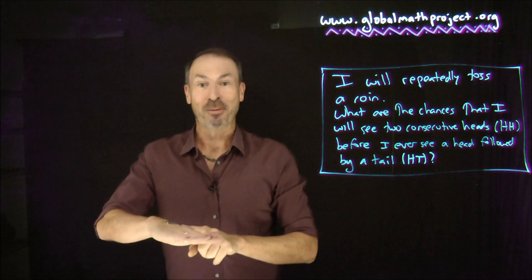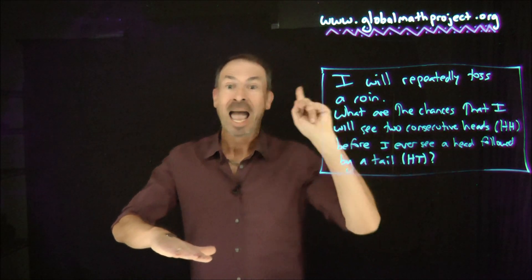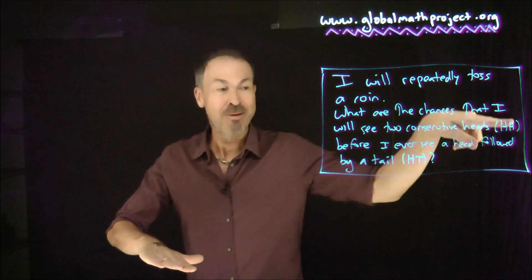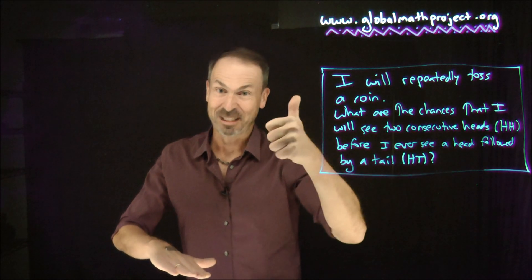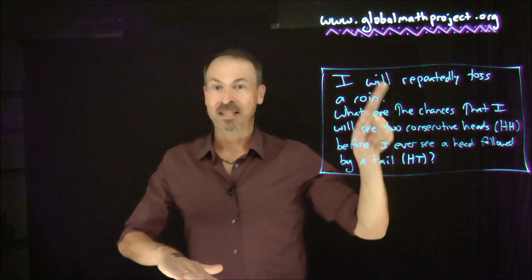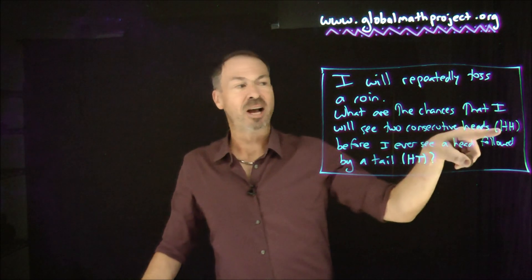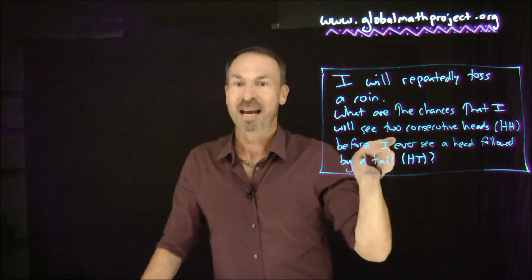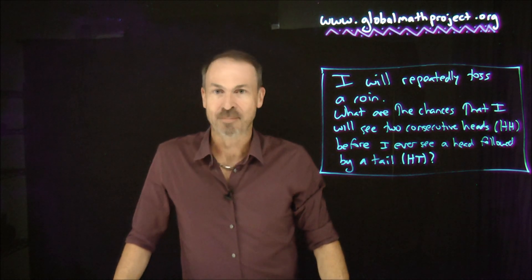Because when I get my first head, then the experiment kicks in, because I'm about to either have head-head or about to have head-tail. And what are the chances I'll get head-head before I get head-tail? Well, I need to toss a head next. 50%. The answer to this problem is 50%. So I know the answer is going to be there's a 50% chance I'll see heads-heads before I see heads-tails.